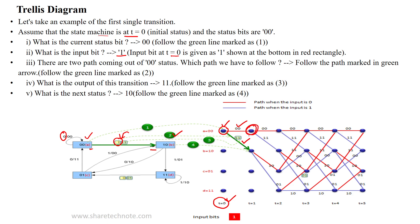Over input 0, the machine moves back to the same state. After moving from state 00 to the next state over input 1, the output of this transition is 11, as indicated here. The next state is 10. So over input 1, it moves to next state 10. This is the path.